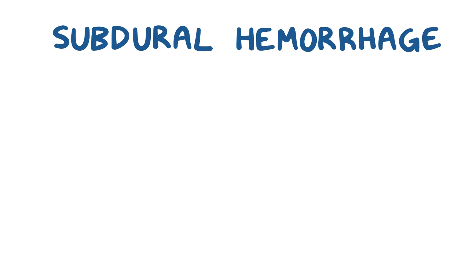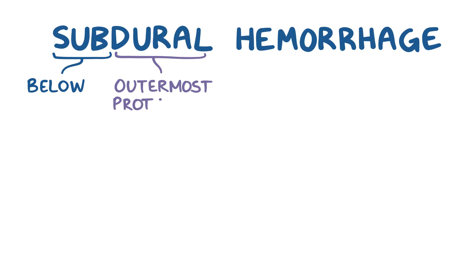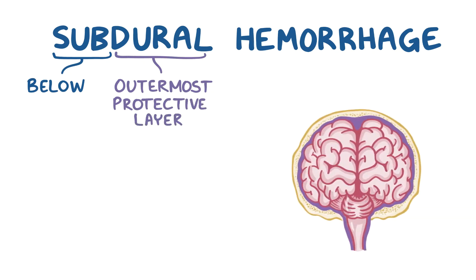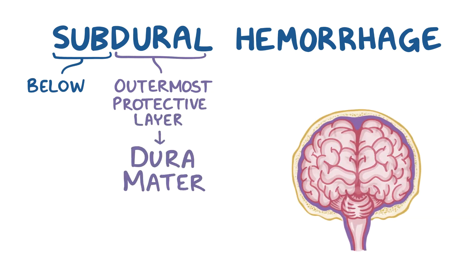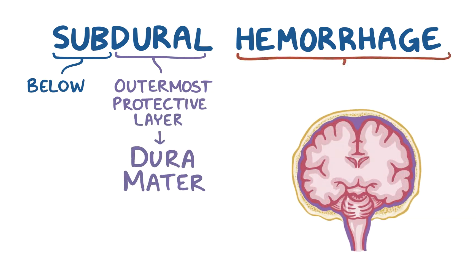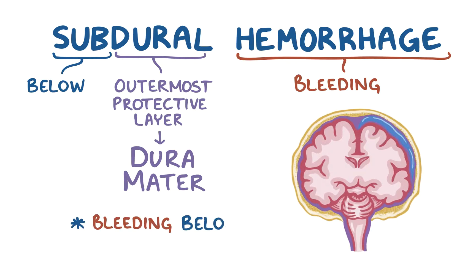Subdural hemorrhage can be broken down: 'sub' means below, 'dural' refers to the outermost protective layer of the brain, which is the dura mater, and 'hemorrhage' refers to bleeding. So a subdural hemorrhage is when there's bleeding below the dura mater.